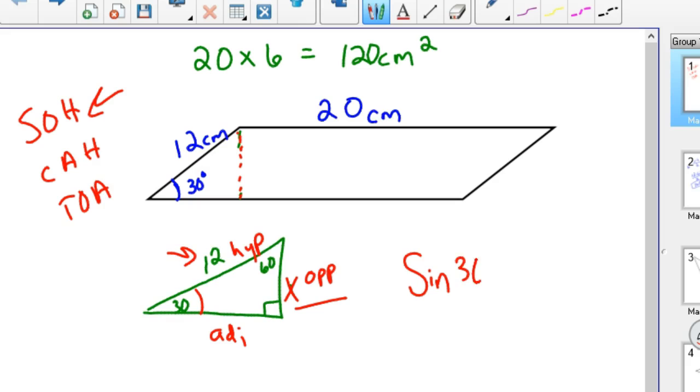You get your calculator out, or maybe you have this memorized, but sine of 30 is 0.5 equals x over 12. You solve for x by multiplying both sides by 12, and so x is equal to 6. So that's another way to show that it works.